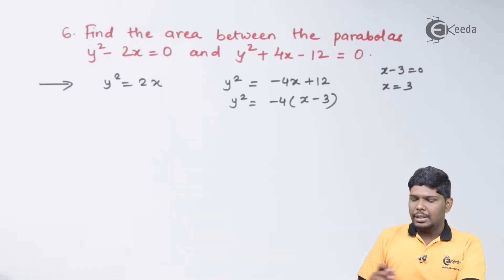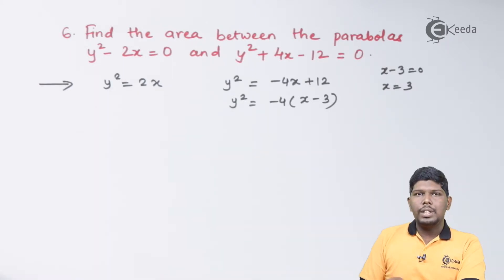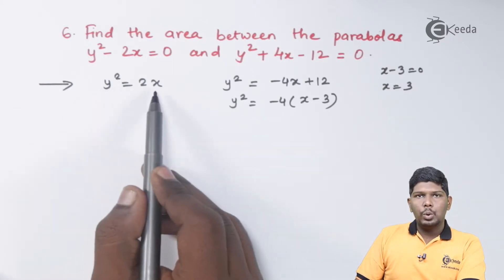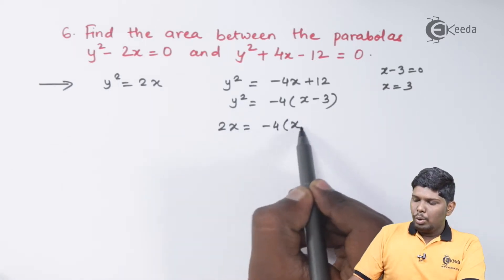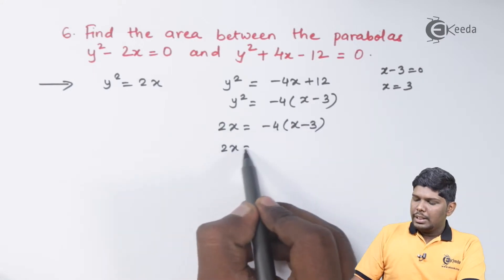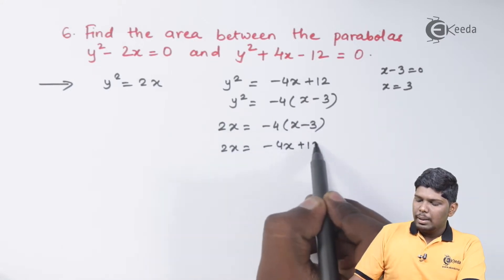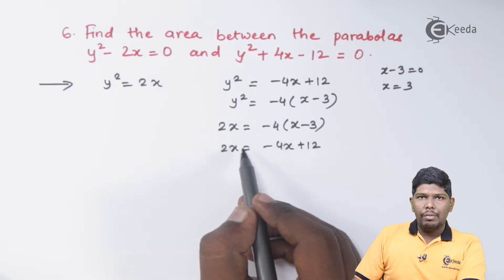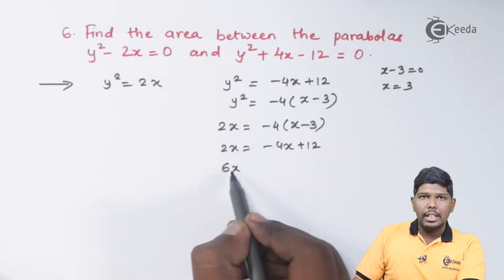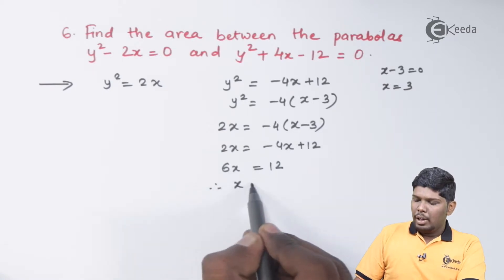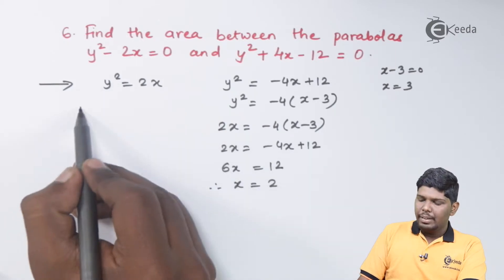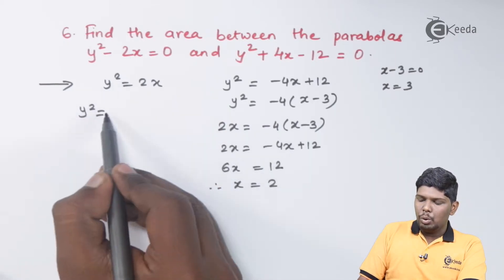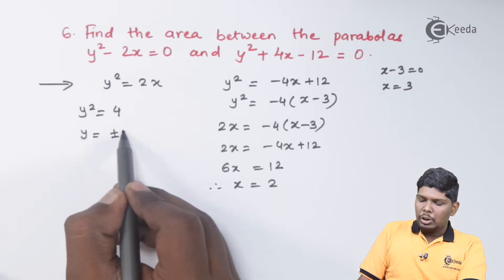Now let us find the points of intersection of the two parabolas. To find the intersection, we solve the two equations simultaneously. Substituting y squared equals 2x into the second equation gives 2x equals minus 4(x minus 3), which simplifies to 2x equals minus 4x plus 12. Taking minus 4x to the left side: 6x equals 12, so x equals 2. Substituting x equals 2 into the first equation gives y squared equals 4, so y equals plus or minus 2.